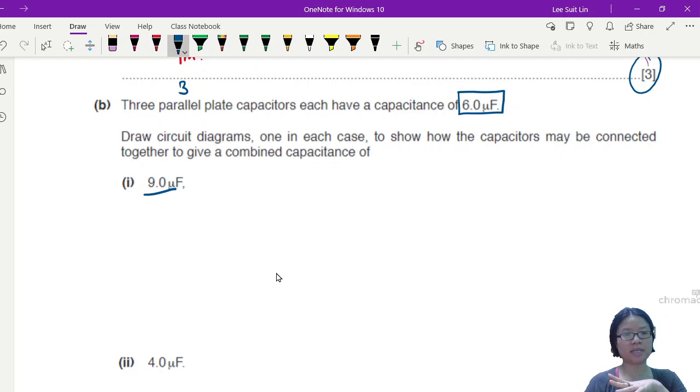Draw circuit diagrams, one in each case, to show how the capacitors may be connected together to give a combined capacitance of nine and four microfarad. If you remember in your AS, we tend to do this a lot for resistors. We ask you to build a network of resistors that can give you a total or combined resistance of such and such a value. So right now we have three six microfarad capacitors. You can think what are the options? One, you can put three of them in series like this.